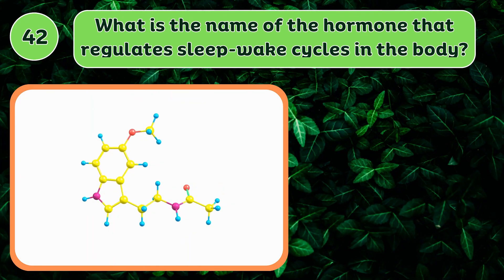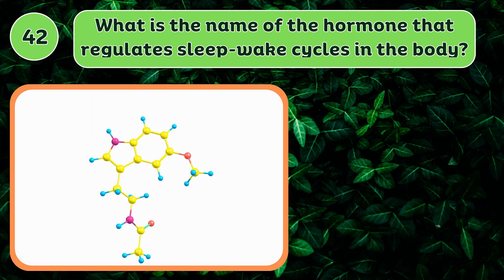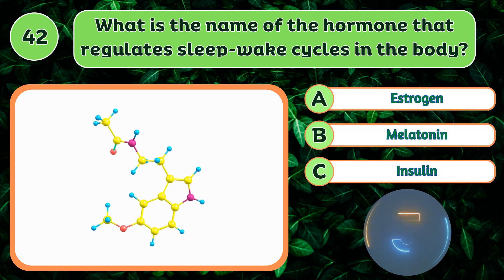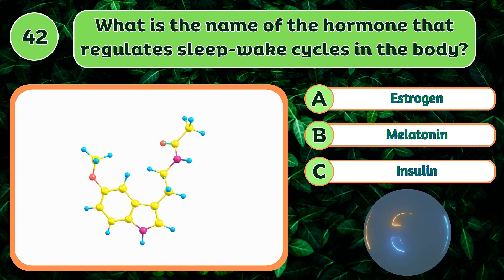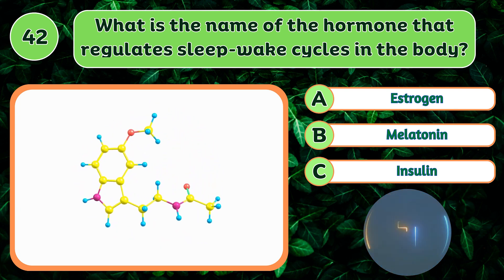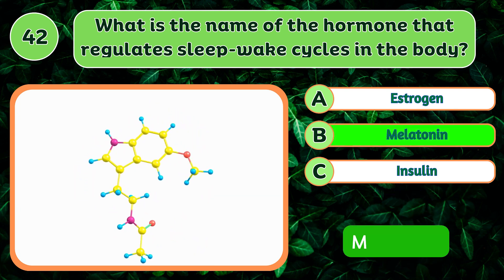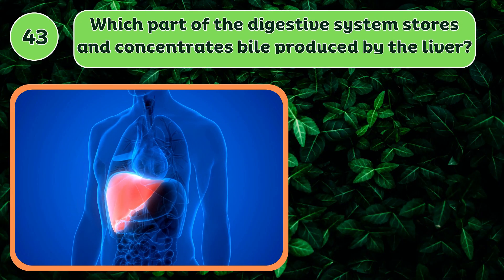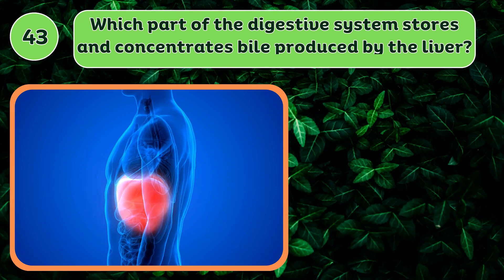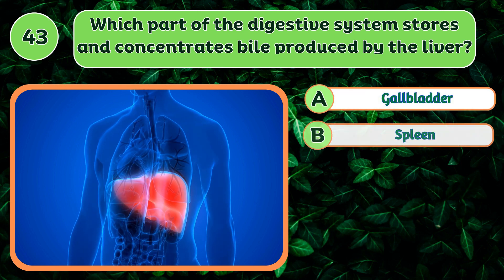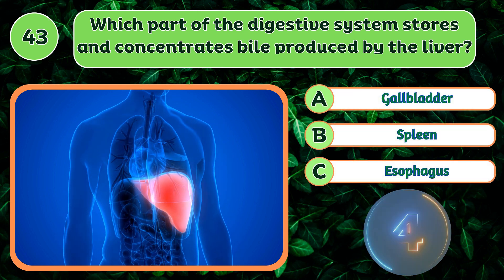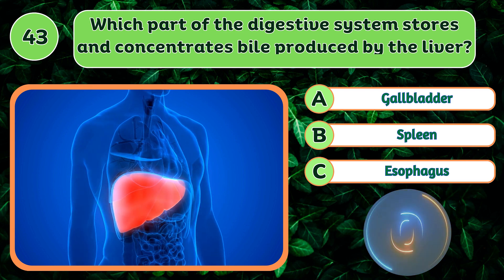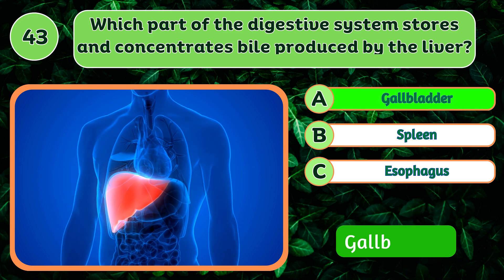What is the name of the hormone that regulates sleep-wake cycles in the body? Melatonin. Which part of the digestive system stores and concentrates bile produced by the liver? Gallbladder.